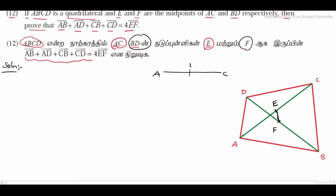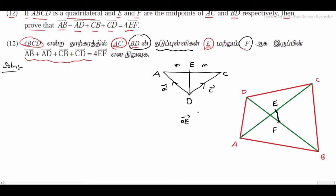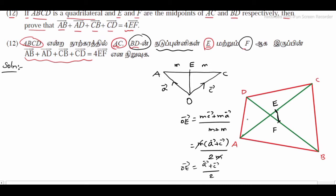Now AC has a midpoint. We can fix the origin. The origin is at C and A. Let us use position vectors. Since E is the midpoint, by the section formula with M to M ratio, OE vector equals M into C vector plus M into A vector, divided by M plus M. So OE vector equals A vector plus C vector by 2. Same procedure applies to BD to find OF.